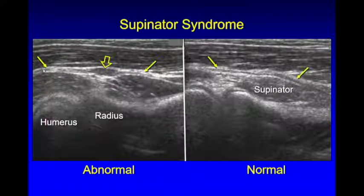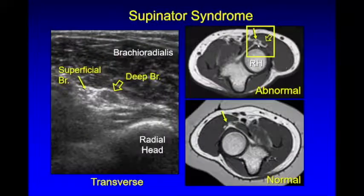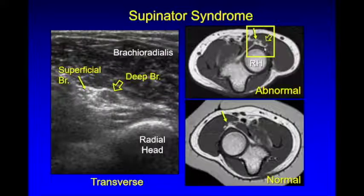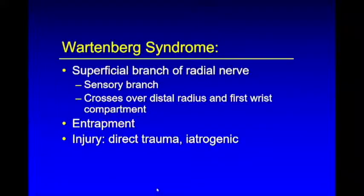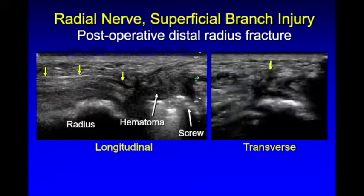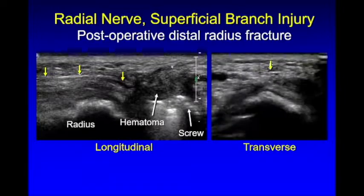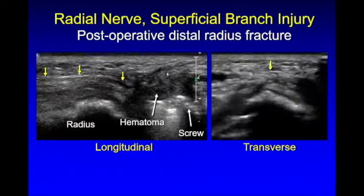As the deep branch enters the supinator between its two layers, we see hypoechoic enlargement at and proximal to the entrapment site. Here is the contralateral normal side. Here in short axis is normal, and here is the abnormal nerve enlarged proximal to the supinator — the deep branch markedly enlarged. Wartenberg syndrome involves the superficial sensory branch of the radial nerve at the level of the wrist, where it crosses over the first extensor compartment. It's prone to injury from phlebotomy or IV placement, or entrapment — as in this case with a radial fracture and plate fixation, where the superficial branch is going right into scar tissue.